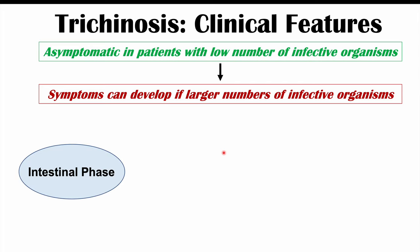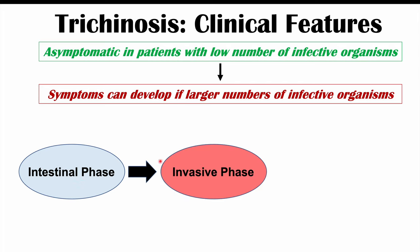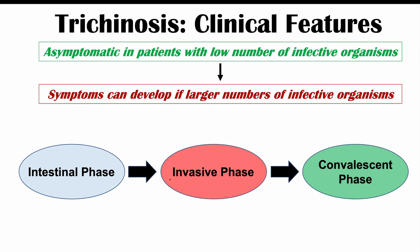There are three phases of this condition. The first is the intestinal phase, when the Trichinella parasite is in the intestinal system. The second is the invasive phase, when the parasite invades through the intestinal mucosa, enters the circulation, and invades other bodily systems. The third is the convalescent phase, where the patient is recovering and healing.